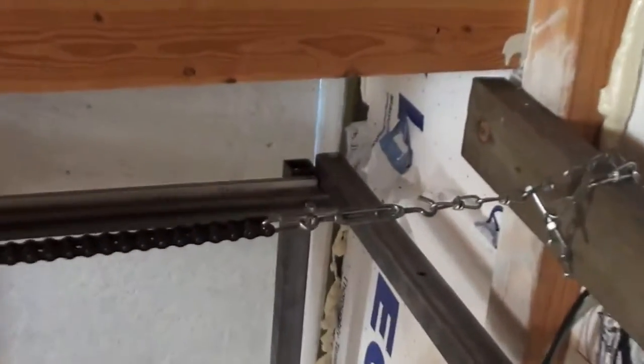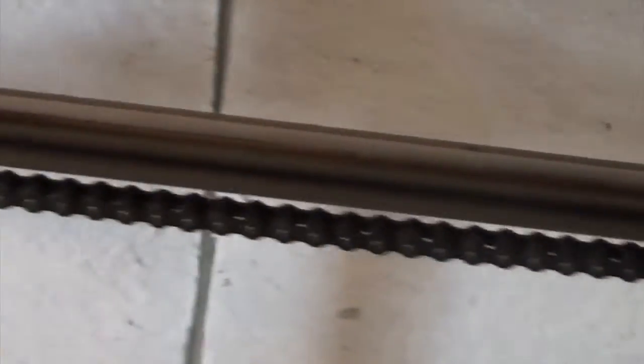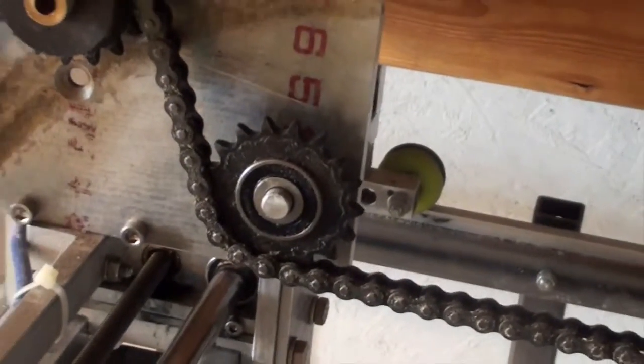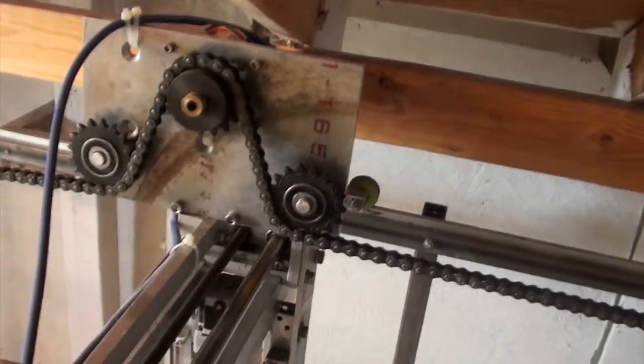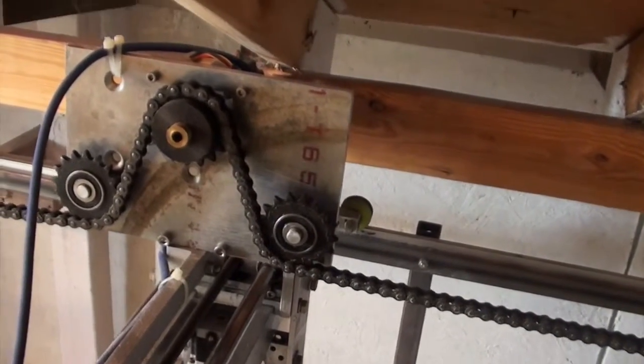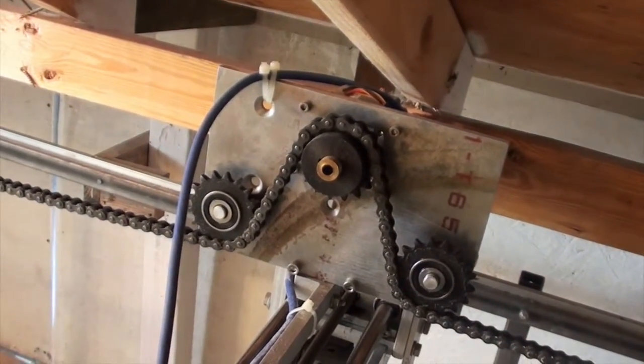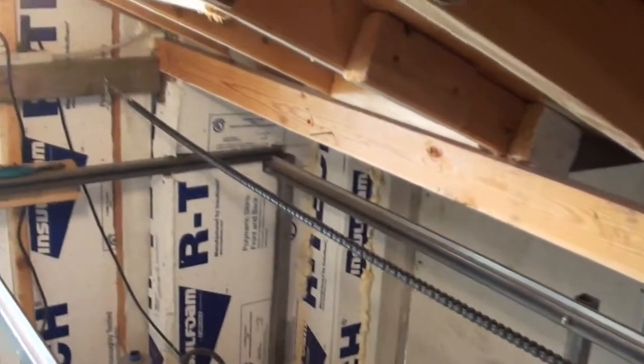So this entire Y axis unit which goes across the surfboard moves up and down along X on these wheels. The way it moves is there's a chain that's attached to one side of the shed. The chain goes through a sprocket mounted to an aluminum plate that sits above the Y axis and is attached to it. The chain then goes around another sprocket, down around a third sprocket, and extends to the other wall of the shed where it's attached.